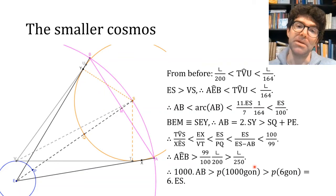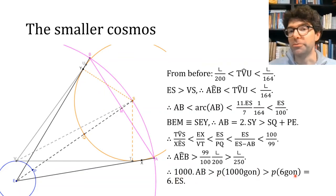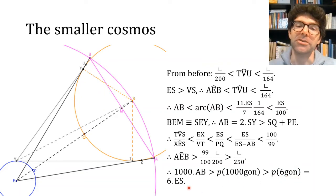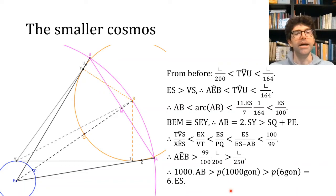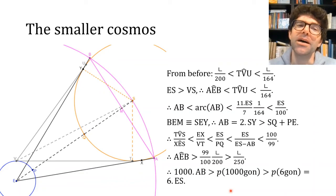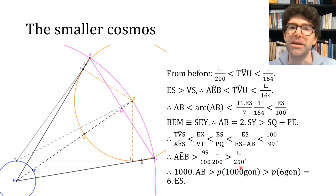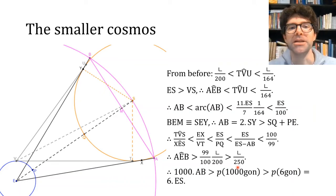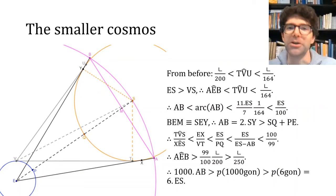This is a very ingenious approach to a problem that nowadays you would just charge into with trigonometry and a calculator. If you do that, you'll find the lower bound of the angle at E is only a tiny bit lower than the lower bound for the angle at V — you could replace the 250 with something like 200.005. But Archimedes doesn't need a precise bound, so he manages to do the whole thing with quite nice round numbers, obviously avoiding trigonometrical functions.